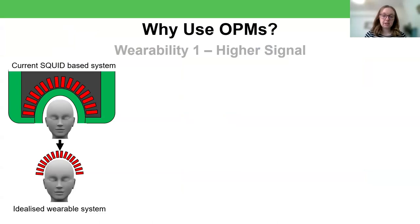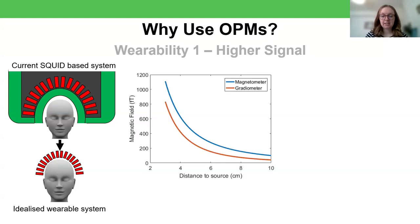This wearability has a few advantages. Firstly, simply by bringing the sensors closer to the scalp, we can get higher signal. Because the squids have to be so cold, there's a certain amount of insulation needed between the head and the squid system. And for an adult head, that can be around three centimeters. But the magnetic field from the brain decreases as the square of the distance between the source within the brain and the sensors. This blue line here represents this relationship for a magnetometer. So if we take a source in the brain that in our squid system is about six centimeters from the sensors, then bring the sensors directly onto the scalp, simply by losing that bit of insulation, the sensors are about three centimeters closer to the source. And that equates to an increase in signal of about a factor of four.